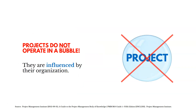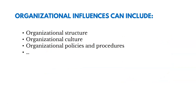We're influenced by things inside and outside of our organization that change how we manage the project. Influences inside the organization could include things like organizational structure, culture, policies and procedures, and so on. Let's first talk about organizational structure, the different types and how those affect the way that we manage projects.